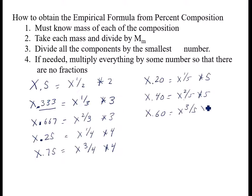So x.60 is x, and that's three-fifths. So again, I multiply by five. And x.80 is x, four-fifths. So it's also times five.